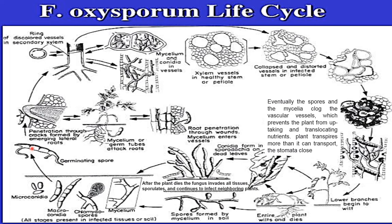After germination, penetration begins through cracks formed by emerging lateral roots. The mycelium or germ tube attacks the roots. Then, through root wounds, the mycelium enters the vessels. After infection, within a few days, a ring of discolored vessels in the secondary xylem is observed.